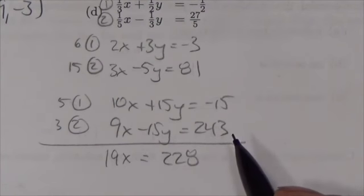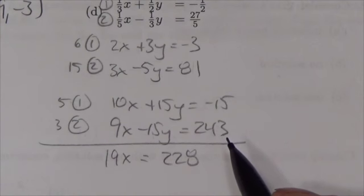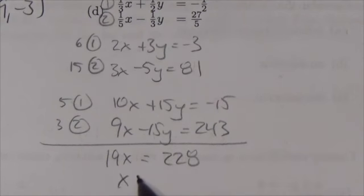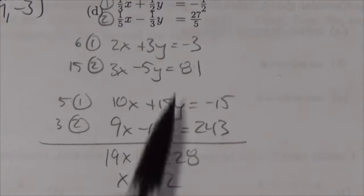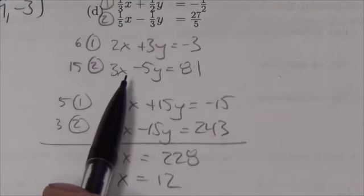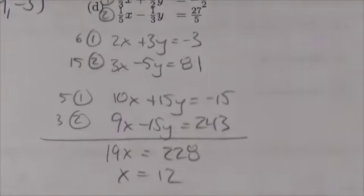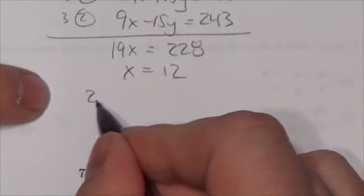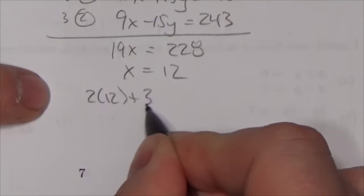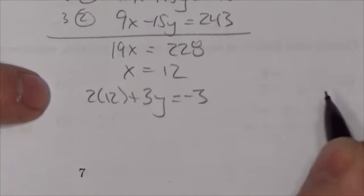228 divided by 19 gives us 12. Now I'll take this value and go back to one of the equations—the first one. Plugging that in gives 2 times 12 plus 3 times y equals negative 3.